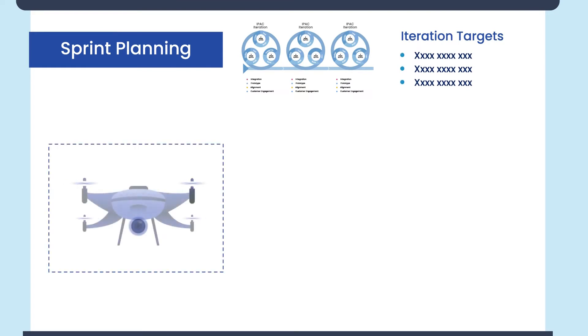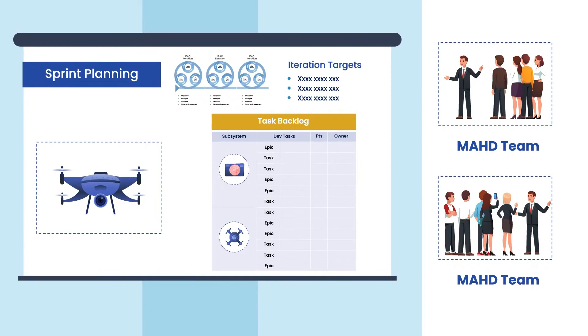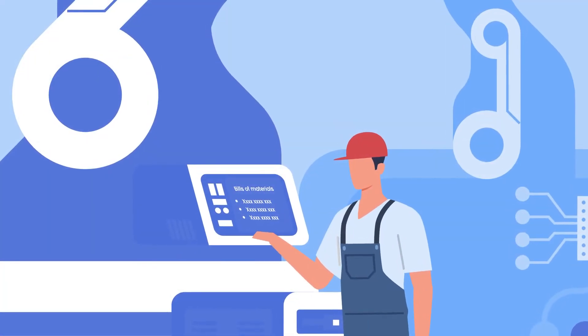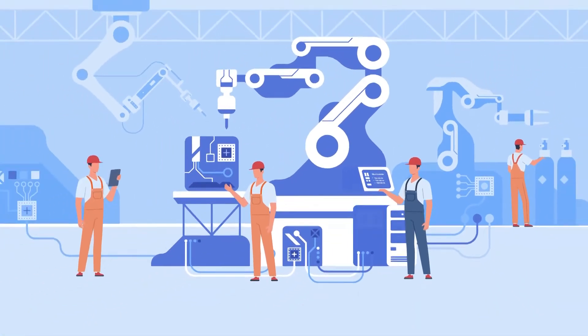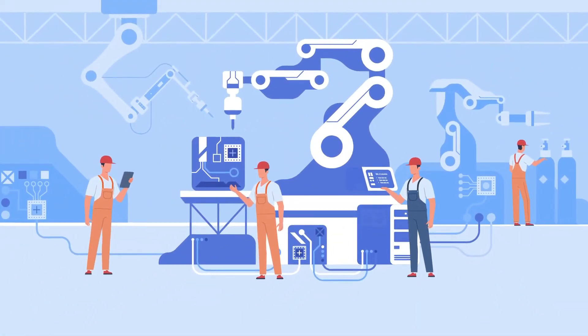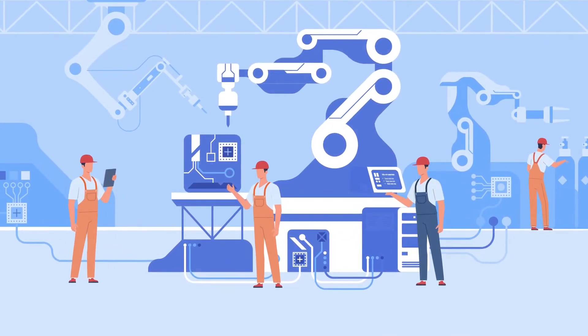After creating IPAC goals and acceptance criteria, MAD teams prioritize their backlog and execute tasks in two-week sprints. With each iteration, the product is refined, teams manage lead times and dependencies, and crucial artifacts such as the architecture and bills of materials as the project moves closer to production.